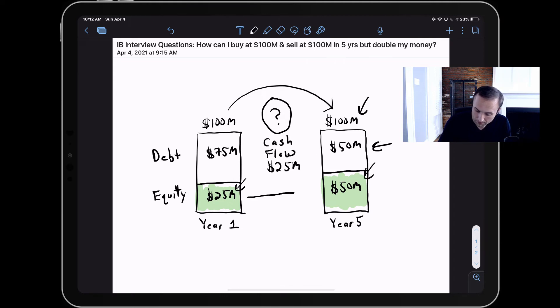So we started with twenty-five, we ended with fifty, and as a result we would generate here a 2x return. We would double our money.